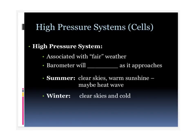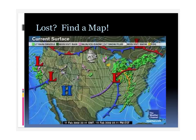High pressure systems or cells are associated with fair weather — clear skies, gentle winds, a pretty nice day. When a high pressure system approaches an area, the barometer is going to rise, because the pressure is going higher. Remember, barometers measure air pressure. In the summertime, a high pressure cell brings clear skies — nice and sunny, probably a gentle breeze, maybe even a heat wave. In the wintertime, because of those clear skies, it's not trapping in any heat and it actually brings colder weather, because that heat isn't being locked in by clouds. But still clear skies and relatively gentle, calm winds.